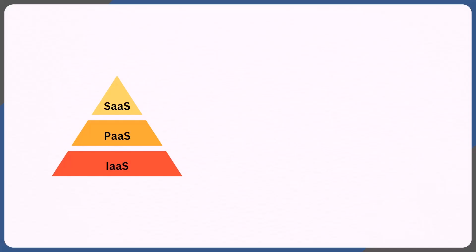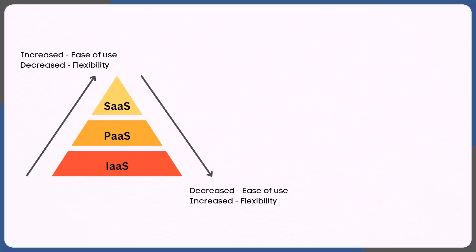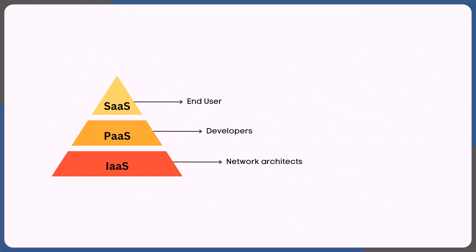If I were to layer all the cloud computing models in the form of a pyramid, then as we go up the pyramid, we're going to see an increase in ease of use but a decrease in flexibility — meaning we'll have lesser control on the infrastructure and the platform. Conversely, as we go down the pyramid, you'll see a decrease in ease of use but an increase in flexibility.